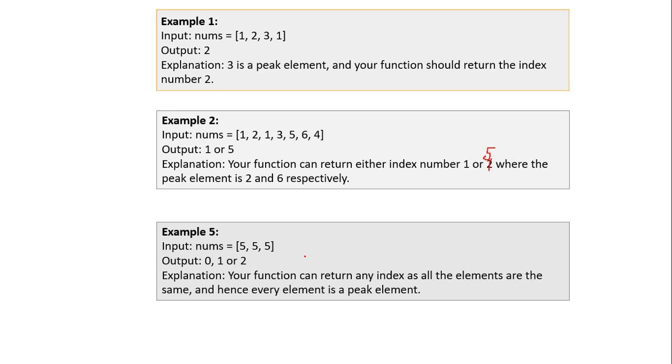Now that we understand what a peak element is, let's find out how to solve this problem. The best way to understand an algorithm is through an example, which we'll do before implementing it in code. This algorithm is an implementation of binary search, which works on the concept of an upper limit and a lower limit, using which we find a mid value that helps us reach the final output.